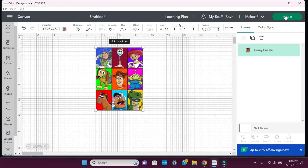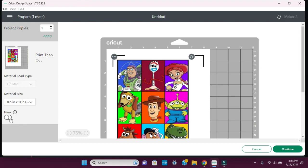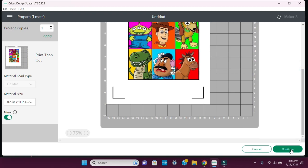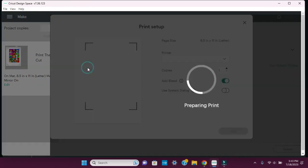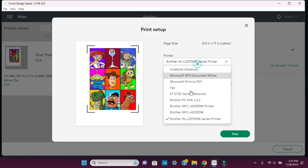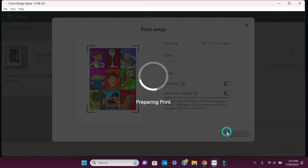Let's go ahead and hit Make It. We're going to send it to the sublimation printer. We need to turn the mirror on and then continue. Send to printer. So again, we're going to send it to the Epson, which I converted to a sublimation printer. Let's go ahead and change that. I'm going to leave the bleed on.